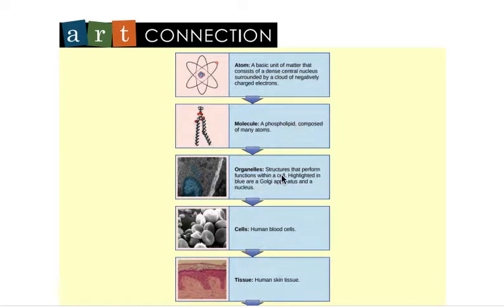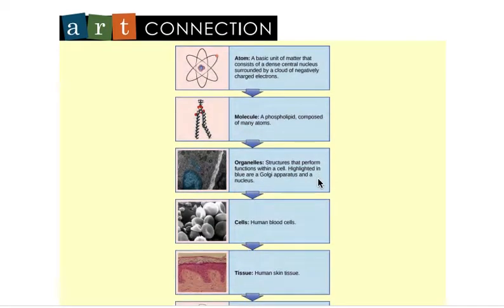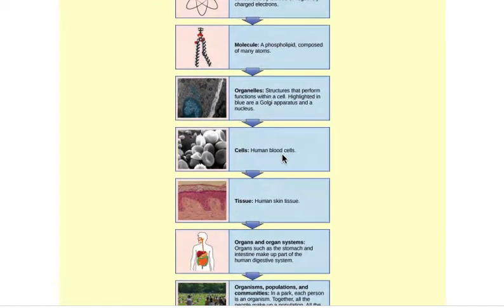So bigger than that, those molecules are organized into organelles, which are different little parts of the cell. And then from there, cells - individual cells. And a lot of cells are different. You know, you have like blood cells or heart cells or skin cells, and they're all different from each other.